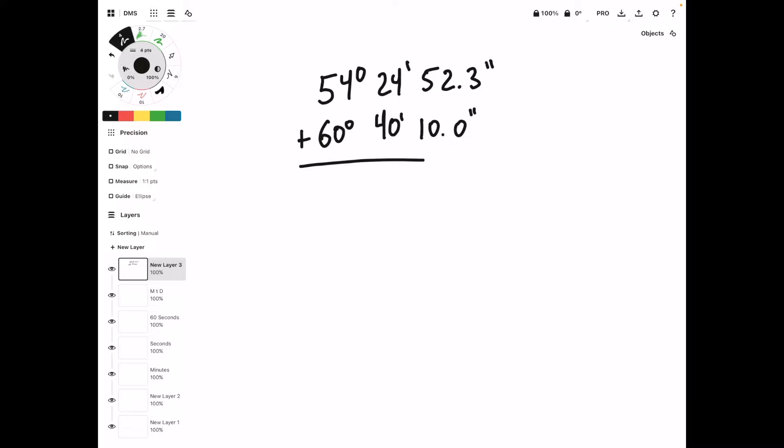So we're going to work through this one column at a time. We're going to start over on the seconds column, and we're going to add 52.3 plus 10. This is going to give us 62.3 seconds. And we should notice immediately that we have more than 60 seconds. In the past video, we figured out that 60 minutes equals 1 degree, and 60 seconds equals 1 minute.